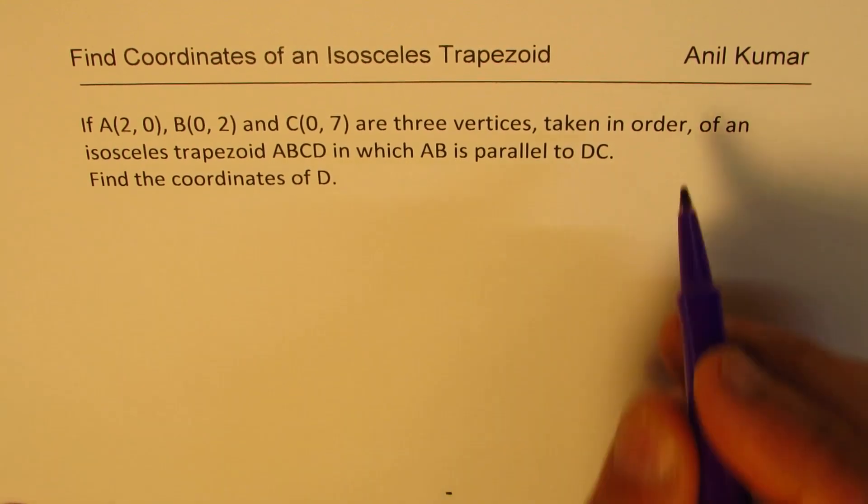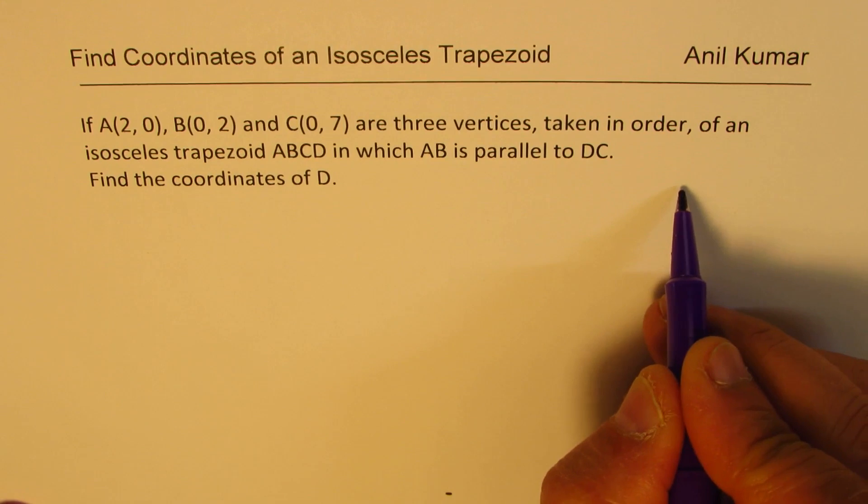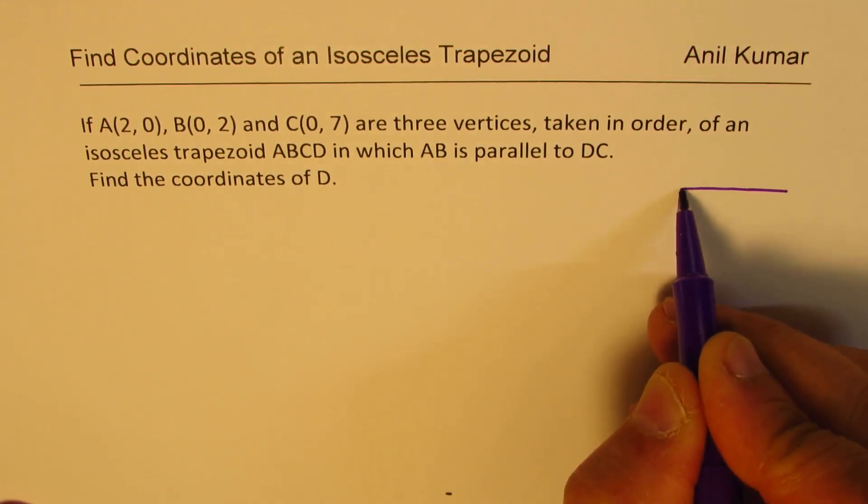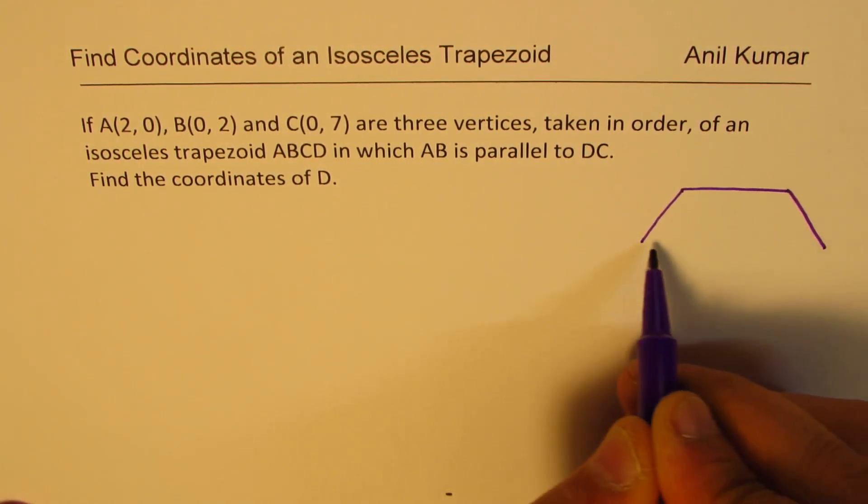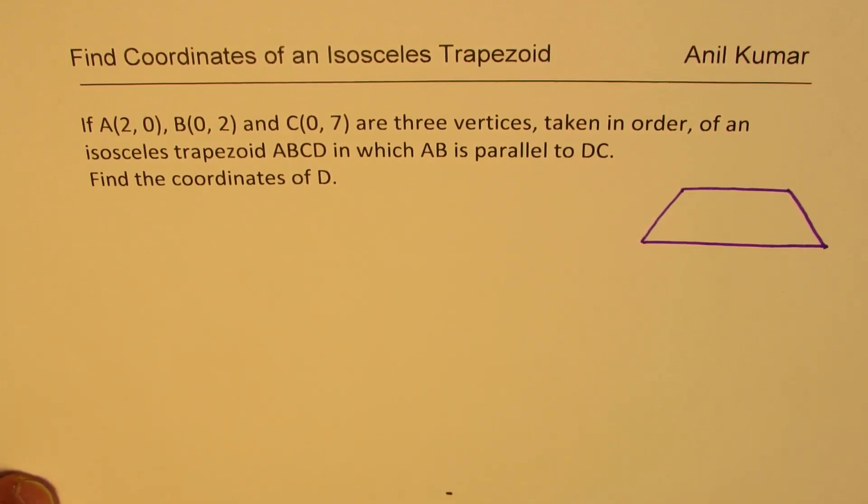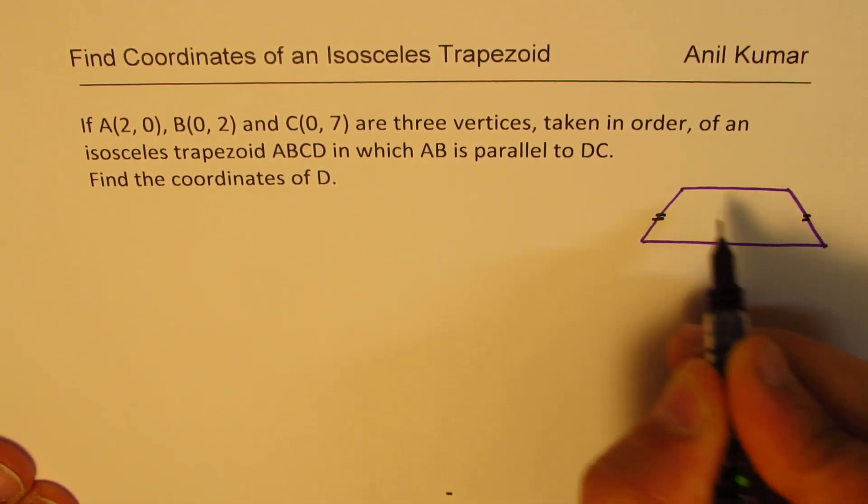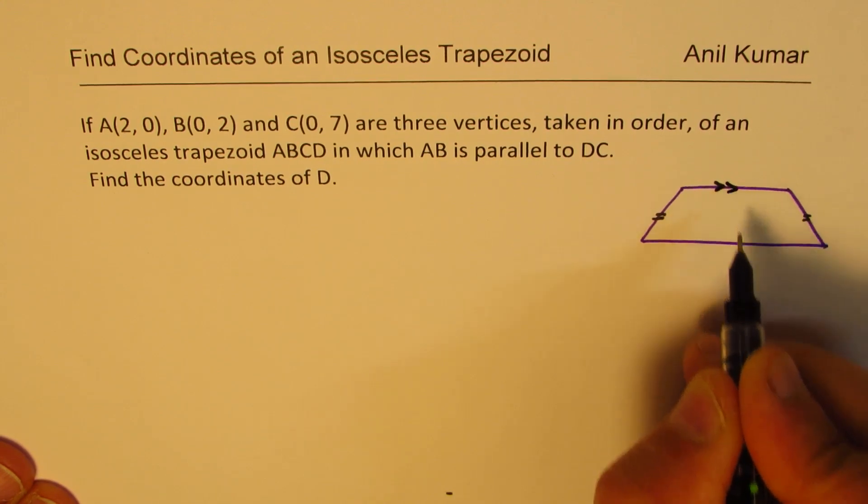So let's try to sketch this and then we'll work out the solution. A trapezoid is a figure where opposite sides are parallel. Isosceles really means that one pair of equal length, right? So we'll say these are equal length and these sides are parallel.